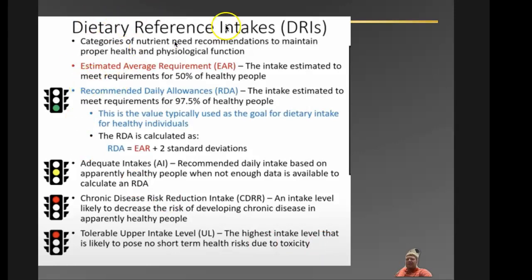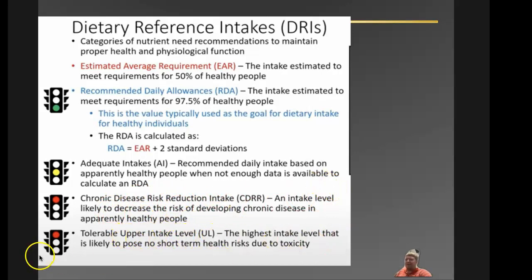It's better to figure out your own nutritional analysis for yourself or your athletes and clients. In addition to the RDA, there are adequate intakes and chronic disease risk reduction intake values you'll see occasionally. Then there's the tolerable upper intake level — that's the highest amount you should have in the short term without any toxicity.